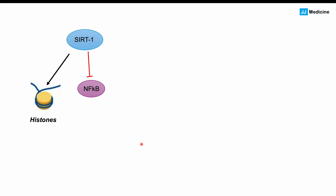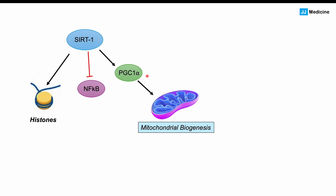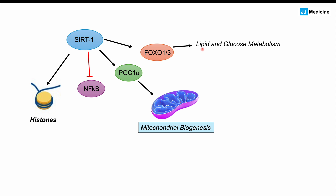Another very important target of SIRT1 is PGC1-alpha, which can promote and increase mitochondrial biogenesis. Mitochondria are the powerhouses of the cell and are involved in energy metabolism — this is especially important as we get older, when we can develop dysfunctional mitochondria. SIRT1 also activates FOXA1 and FOXA3, which are important in both lipid and glucose metabolism, and also in autophagy.